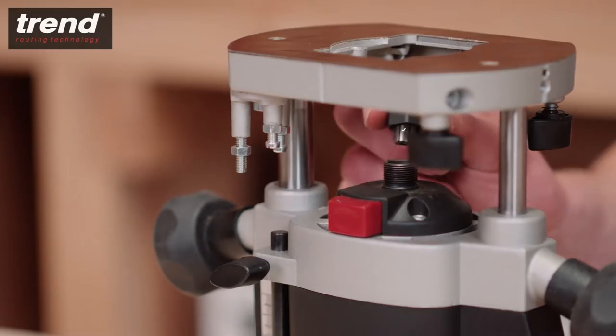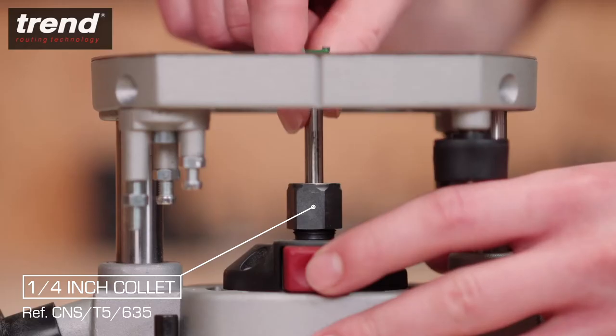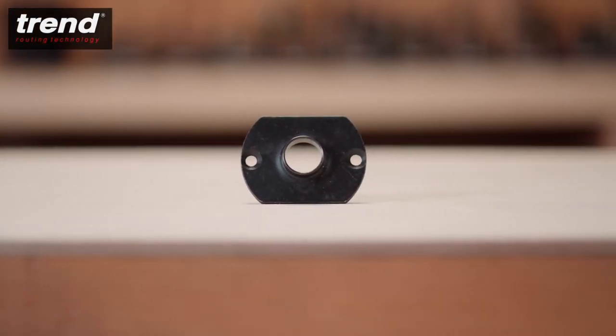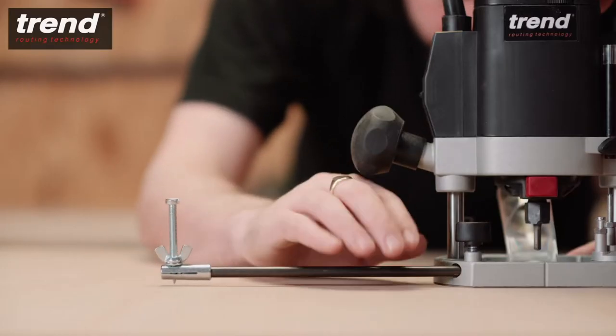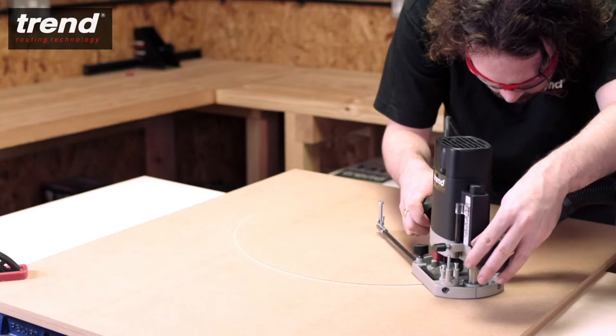Also included with the router is a quarter inch multi slit collet, a 20mm guide bush and a beam trammel attachment for cutting curves and circles.